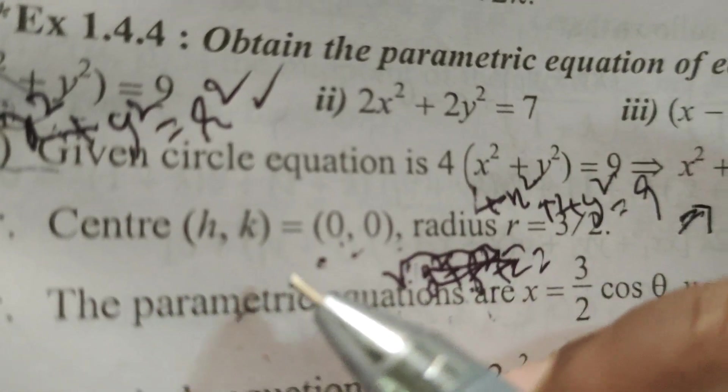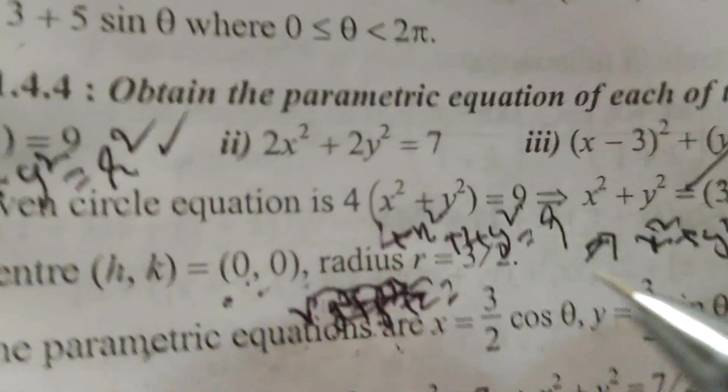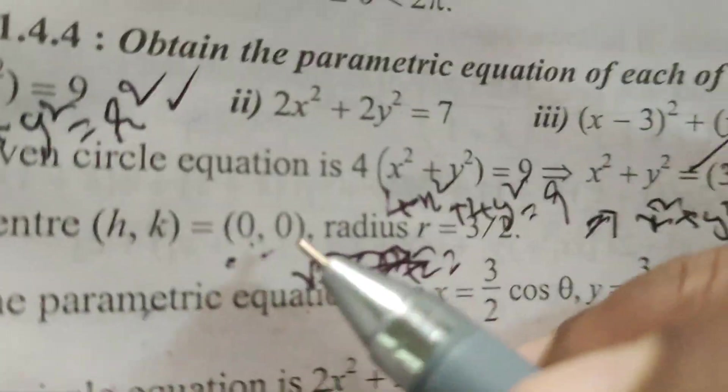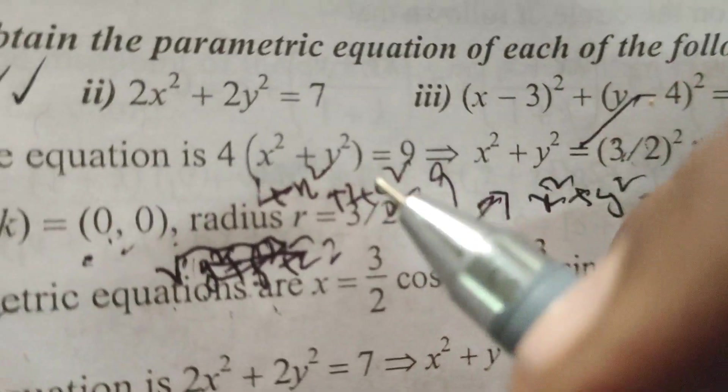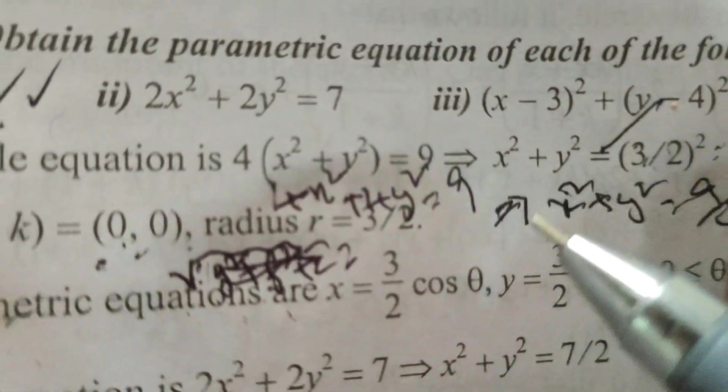Find out the center h, k. h, k, here 0, 0, because no coefficients here G and F.